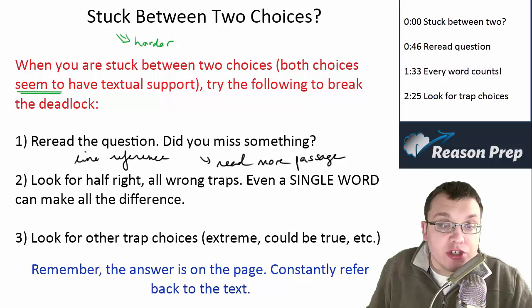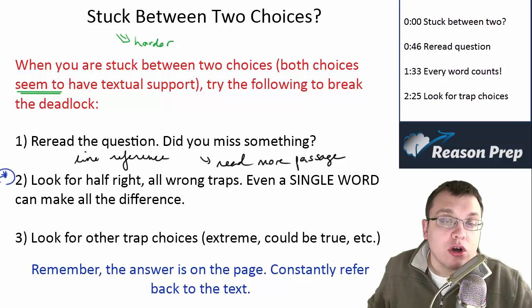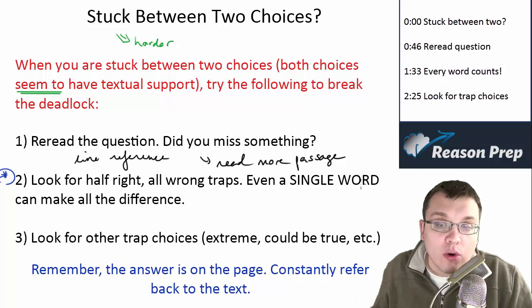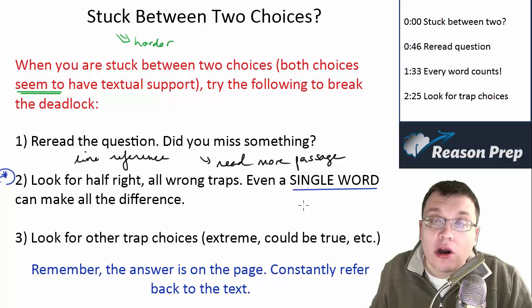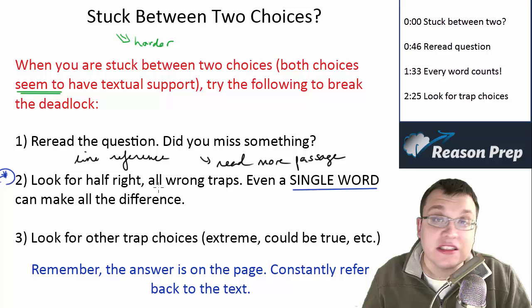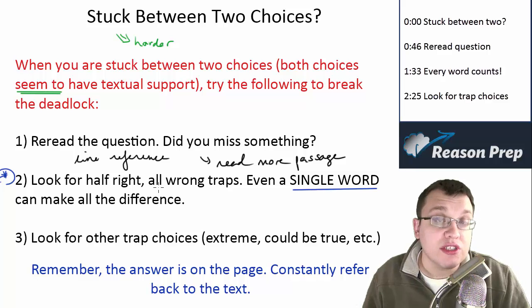One of the biggest steps you can do once you've done that is to look for half-right, all-wrong traps. Remember, these are the ones where even a single word can make all the difference. If the first part of the choice is correct but the last word of the choice doesn't fit with the passage, the whole choice is wrong.